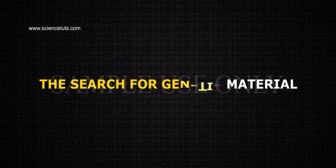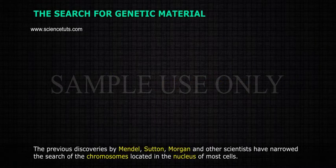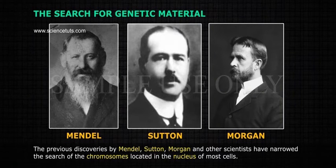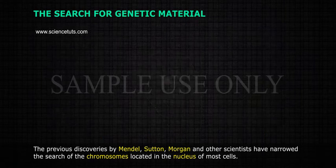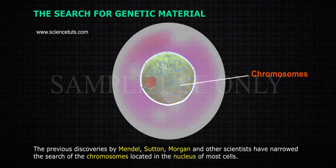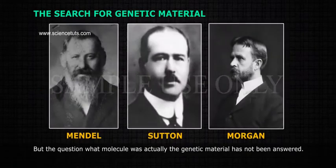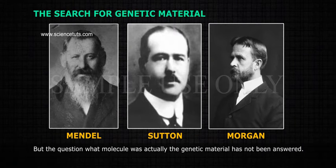The Search for Genetic Material: Previous discoveries by Mendel, Sutton, Morgan, and other scientists narrowed the search to chromosomes located in the nucleus of most cells. But the question of what molecule was actually the genetic material had not been answered.